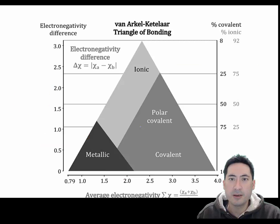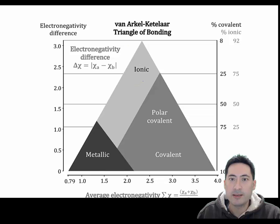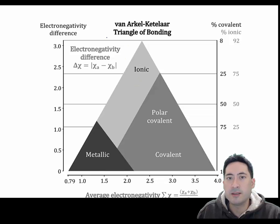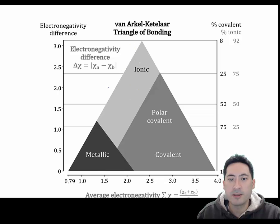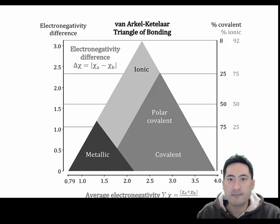So how do we understand this? What we do is we use this thing called the Van Arkel Kettler Triangle of Bonding, which is in your data booklet. So let's have a look at how we use this.